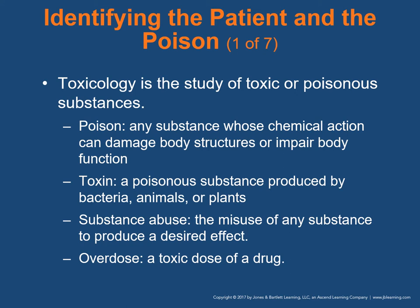Toxicology is the study of toxic or poisonous substances. A poison is a substance whose chemical reaction can damage body structures or impair body function. A toxin is a poisonous substance produced by bacteria, animals, or plants — so it's worth noting the two differences: poison being chemical action, and a toxin being a substance that's produced. Substance abuse is the misuse of a substance to produce a desired effect, and overdose is too much of a single drug or group of drugs.